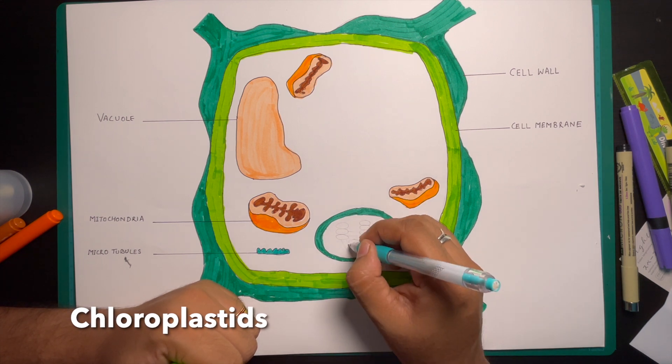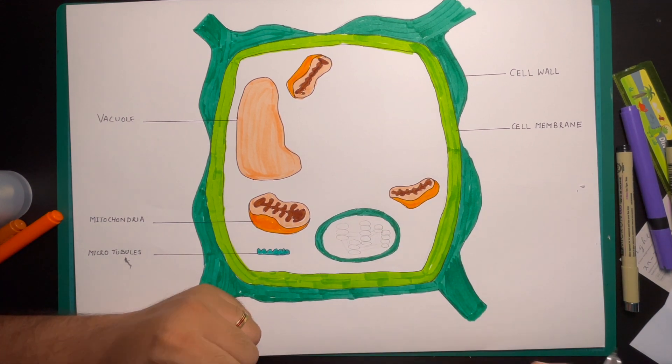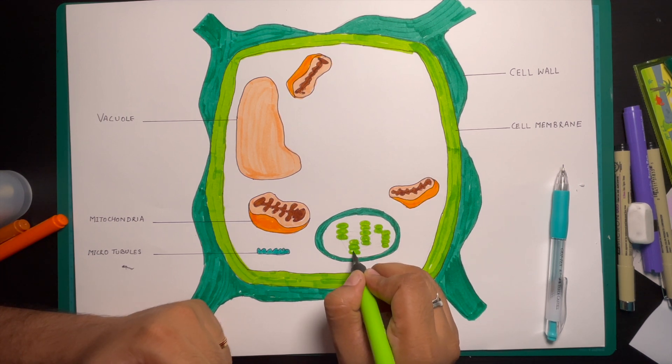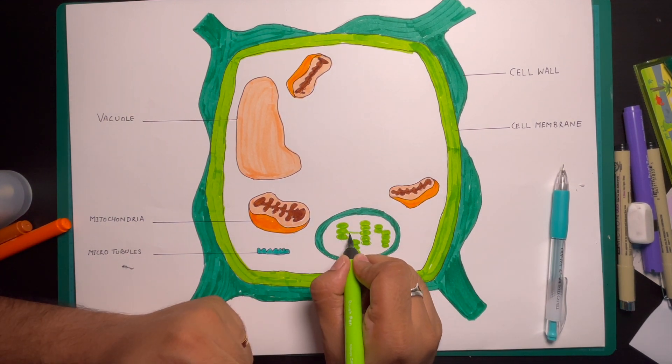Chloroplastids contain green chlorophyll A and B, helps in photosynthesis. Chromoplastids have red, orange and yellow carotene pigments responsible for the color of the flower and vegetable.